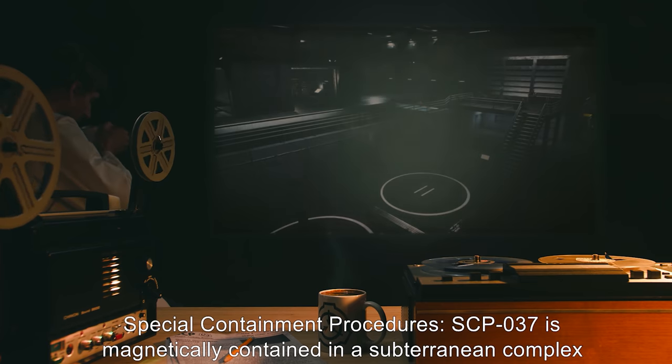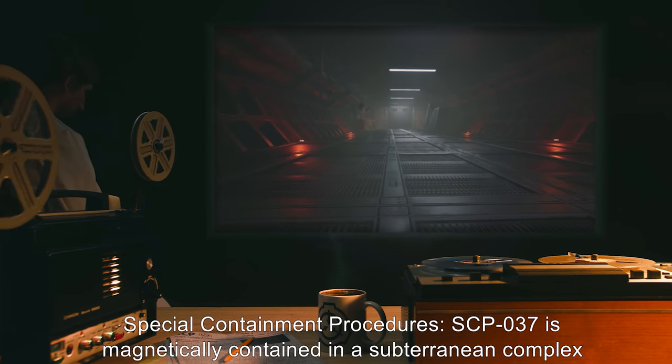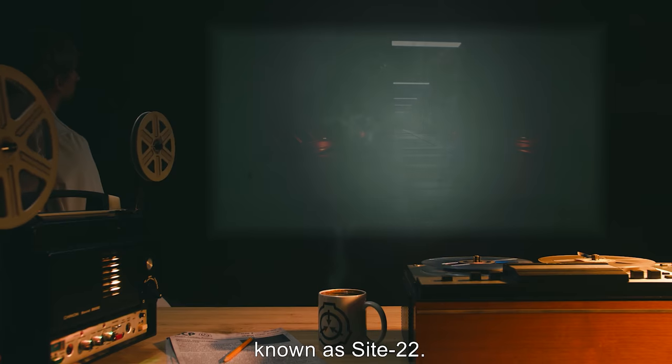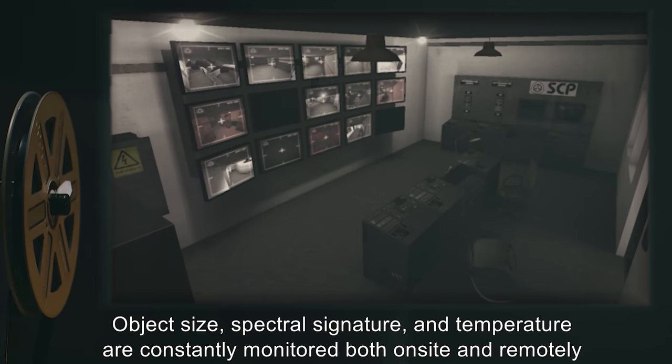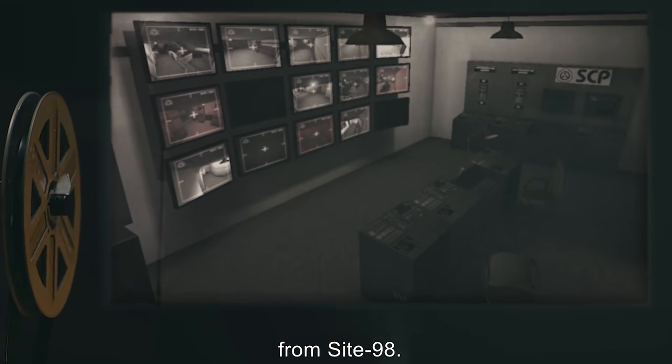Special Containment Procedures: SCP-037 is magnetically contained in a subterranean complex known as Site-22. Object size, spectral signature, and temperature are constantly monitored both on-site and remotely from Site-98.